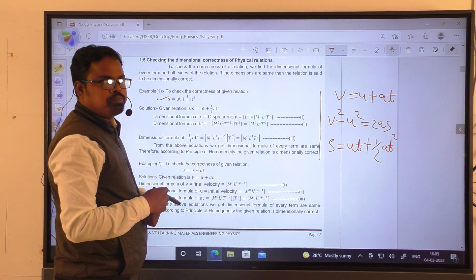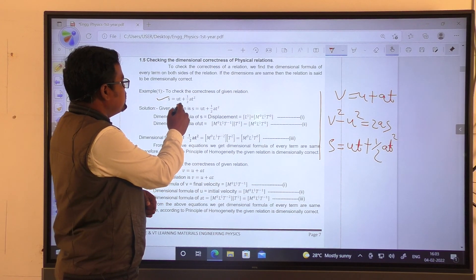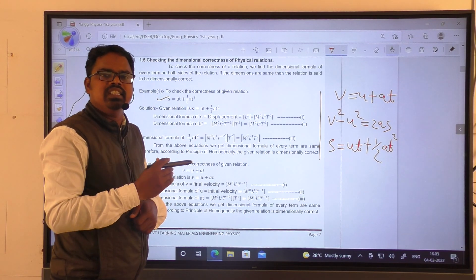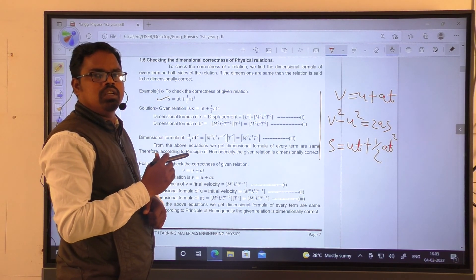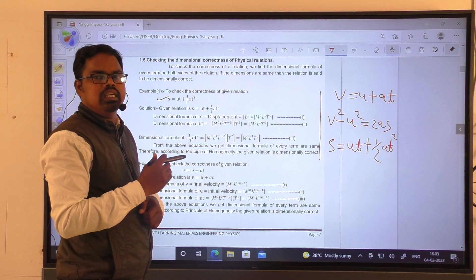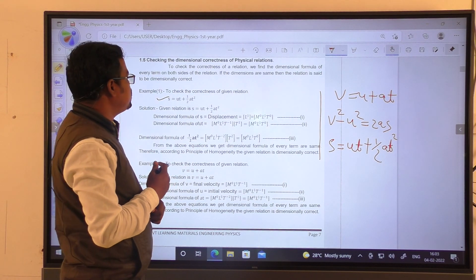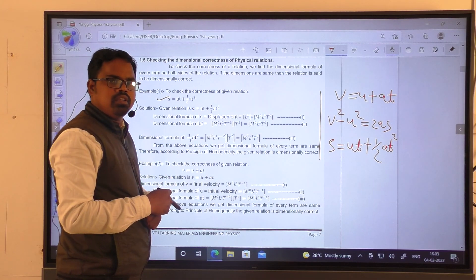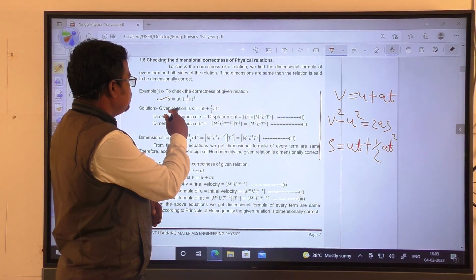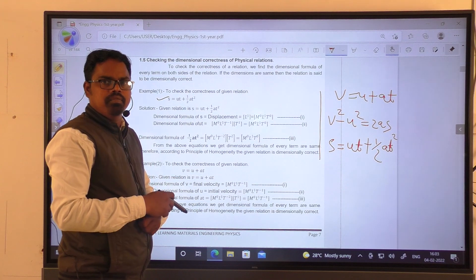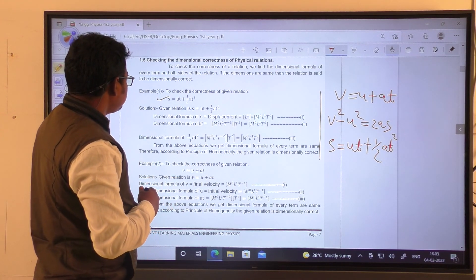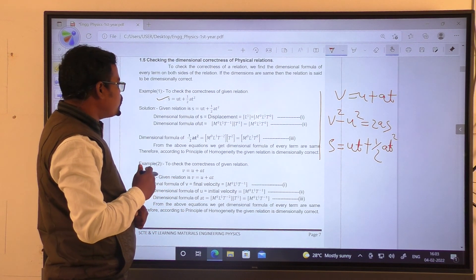S here is displacement, u denotes initial velocity of a body, t is time taken by the body, and a is acceleration. First of all, I am going to mention dimensional formula for S, displacement.